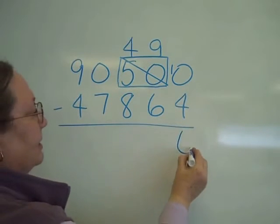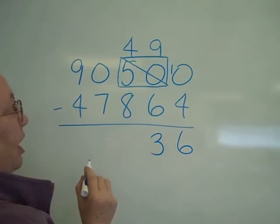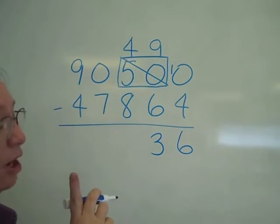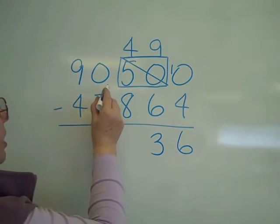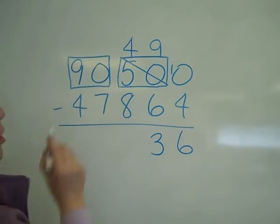10 minus 4 is 6. 9 minus 6 is 3. 4 minus 8, got to borrow. So once again, I start next door and come over until I find something to borrow from.